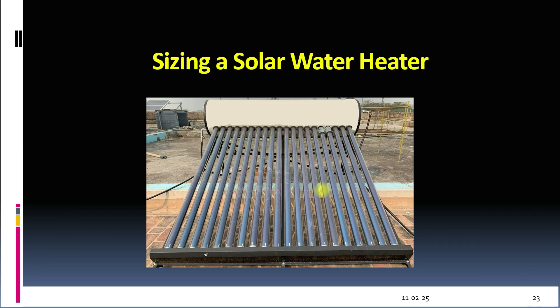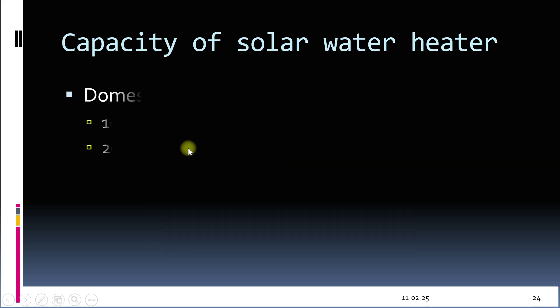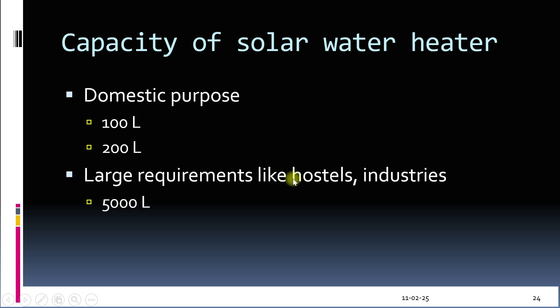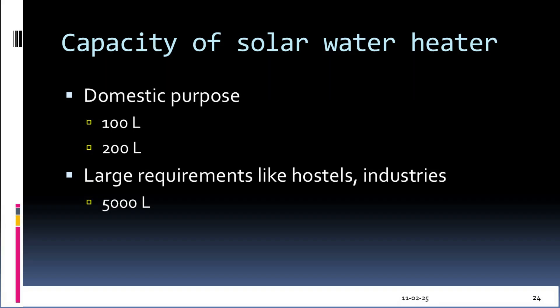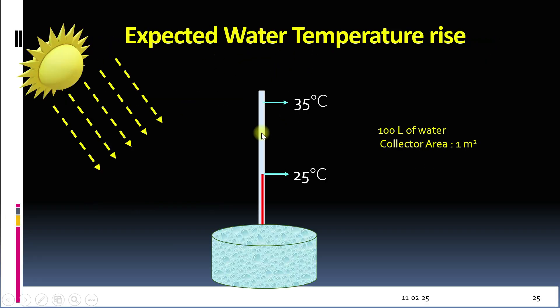The next big question is, what should be the capacity of the solar water heater? The size depends upon your specific needs. For most households, a capacity of 100 to 200 liters is sufficient for 4 to 5 members of the family. However, for larger installations like hostels or hotels, a capacity of 5000 liters or more is needed. So how hot will the water get?